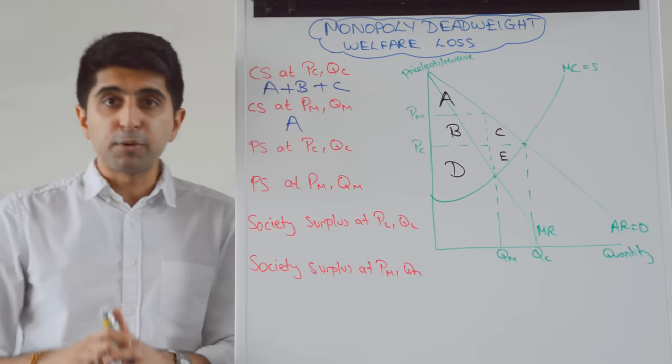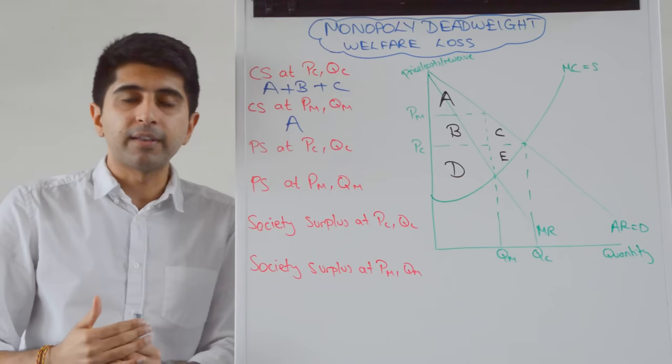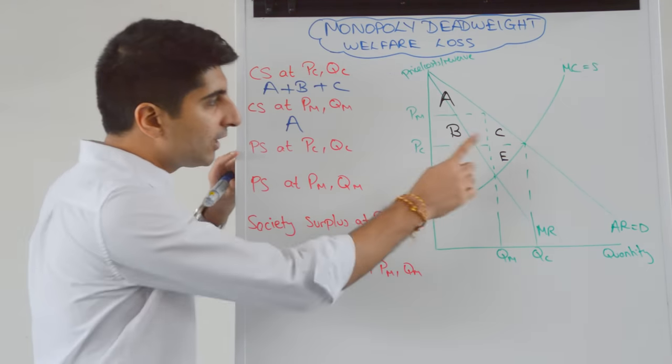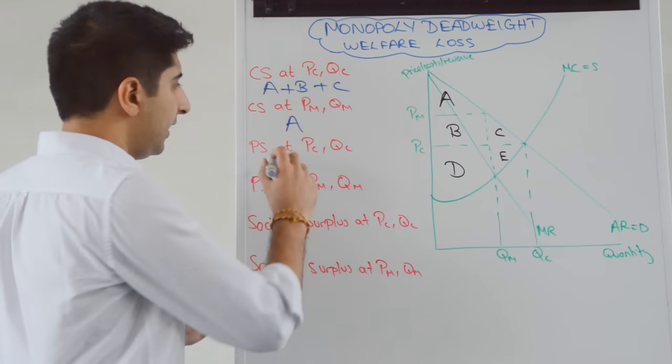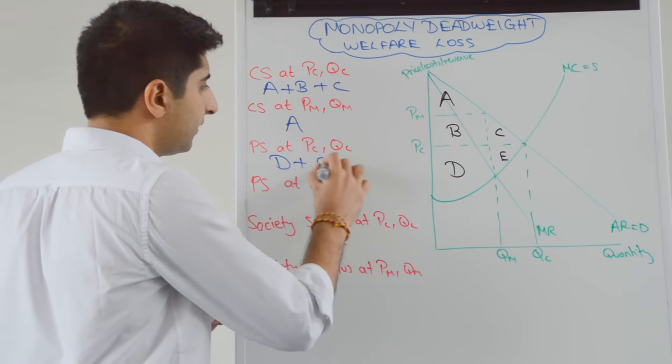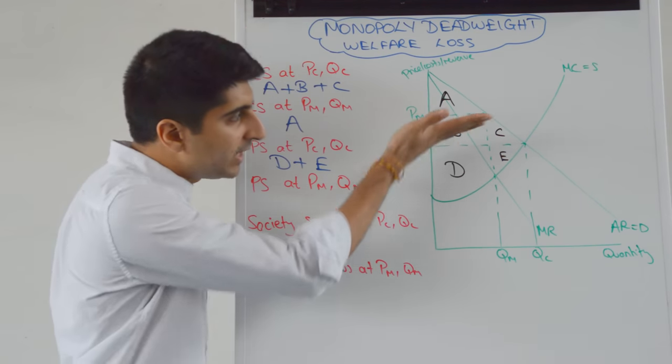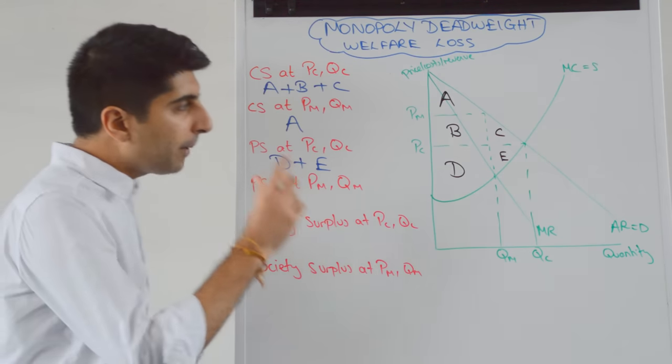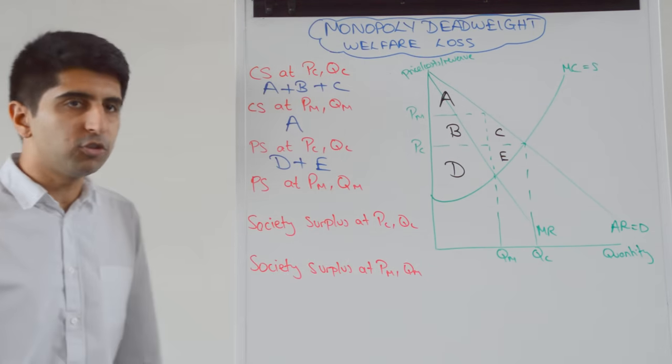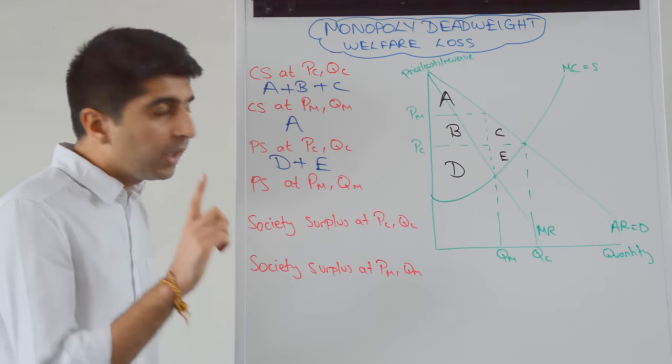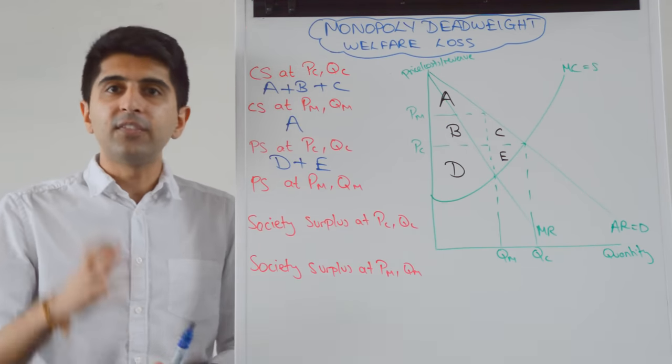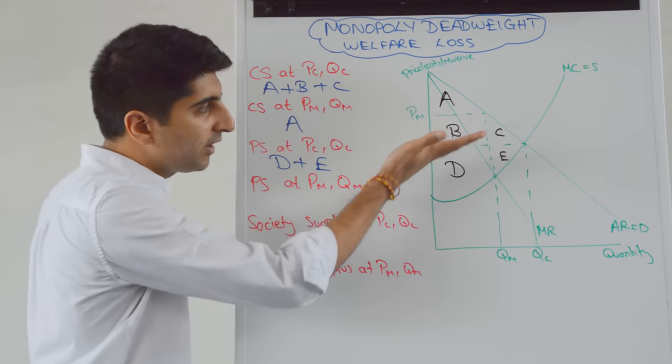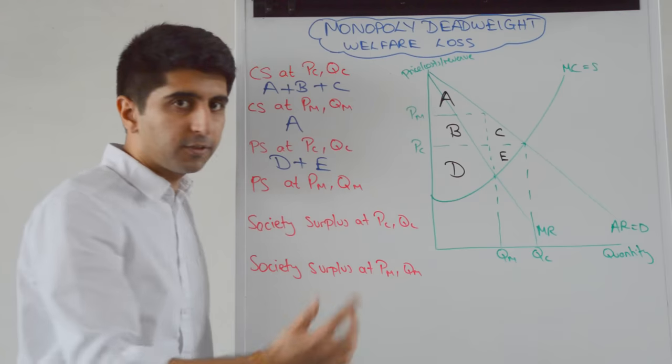What about producer surplus? Producer surplus is the area beneath the price line but above the supply curve, the marginal cost curve in this case. What about with monopoly outcomes? So at PM and QM, what happens to producer surplus? Well, we have to bear in mind the confines of the quantity that the monopolist is producing. So what we need to look for is the area above the supply curve beneath the price but within the quantity that's being produced.